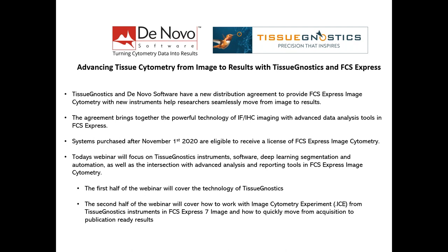Tissue Gnostics and DeNovo Software have a new distribution agreement to provide FCS Express image cytometry with new Tissue Gnostics instruments. Really where we see that partnership and intersection going is helping researchers seamlessly move from images and segmentation results to final publication-quality reports and results in FCS Express. This agreement brings together all of the powerful technology from the IF and IHC imaging with some of the more advanced data analysis tools that FCS Express has to offer. Any systems purchased from Tissue Gnostics after November 1st, 2020 are eligible to receive a license of FCS Express image cytometry.